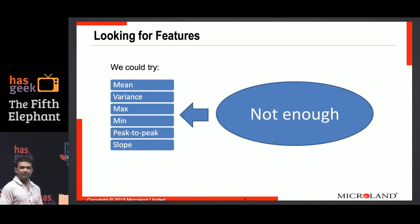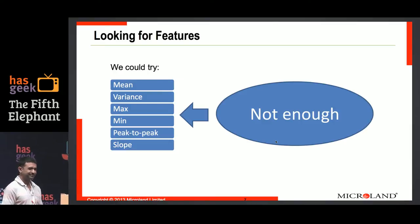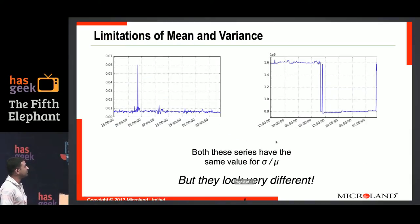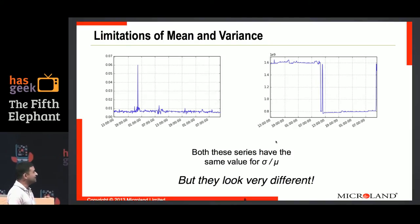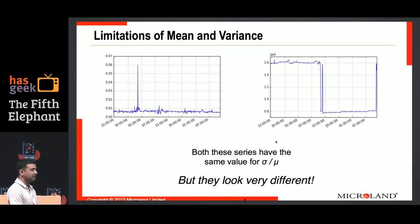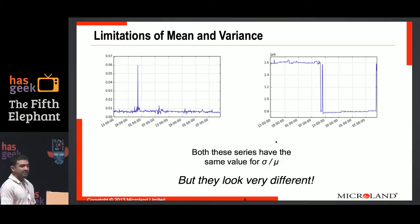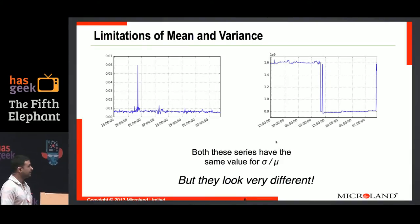You want patterns. You start off looking at some obvious ones — mean, variance, peak to peak. Turns out these are not terribly useful. If you look at the means and variances of these two graphs and then look at their ratio — the coefficient of variation or whatever — they're the same. But the graphs are different. So you're not going to get very far with just looking at the mean and the variance. The problem is that the distribution by itself is not really aware of time.